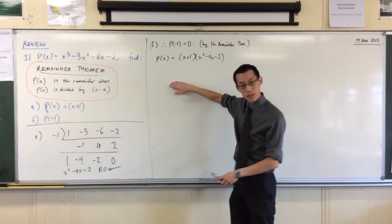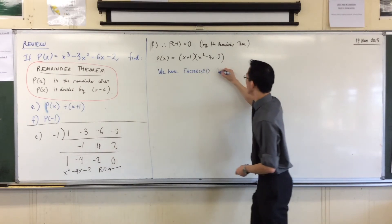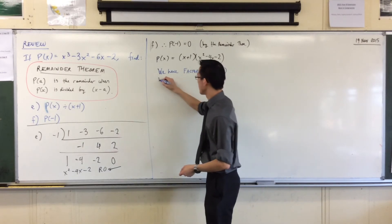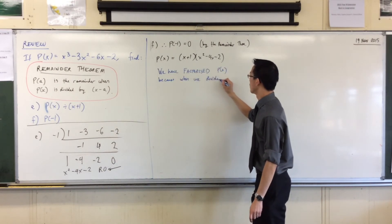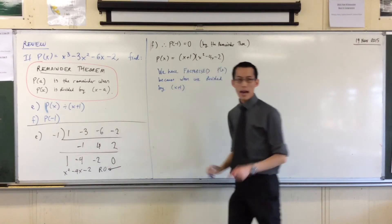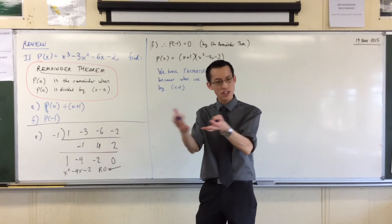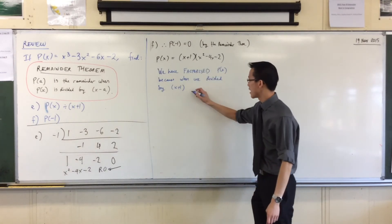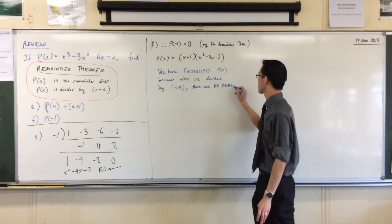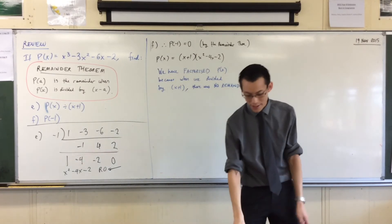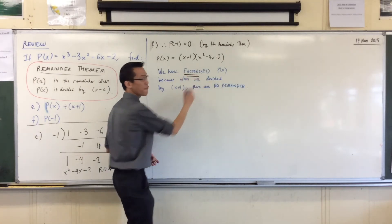So this is a special case of the remainder theorem. When you get a remainder of zero, you don't just get a divisor quotient and remainder, you get factors. So what I would say is, and you can write this as your conclusion, we have factorized P of x. Because when we divided by the particular divisor I gave you, when we divided by x plus 1, here's the key thing: there was no remainder.